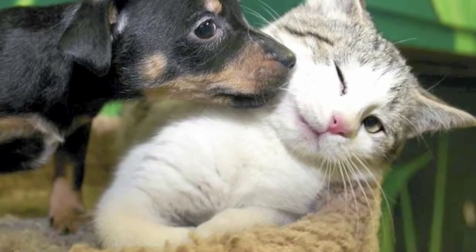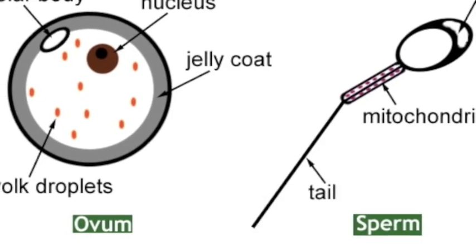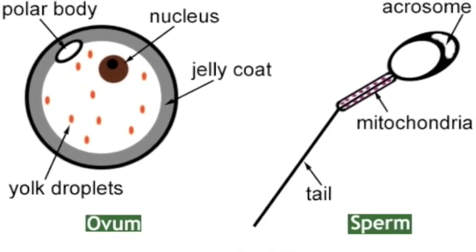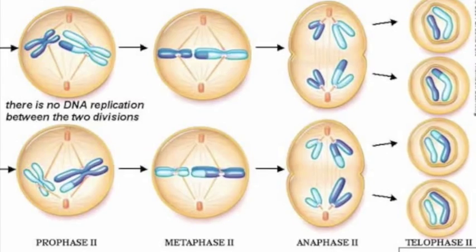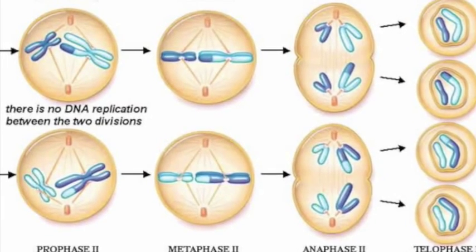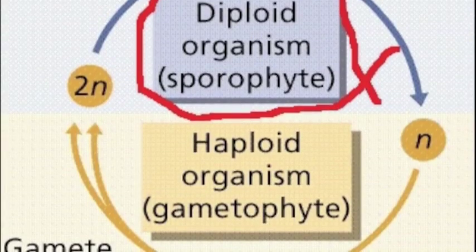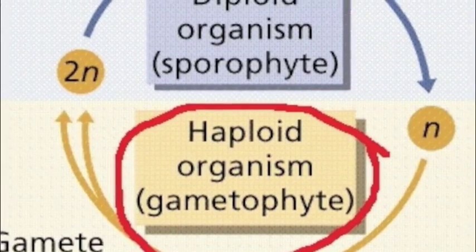Meiosis in animals results in the formation of gametes, which is important for sexual reproduction in all eukaryotic cells. Reduction and rearrangement are accomplished in meiosis, which reduces the number of chromosome sets from diploid to haploid.